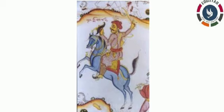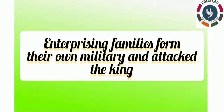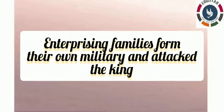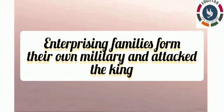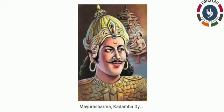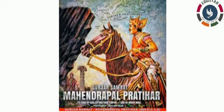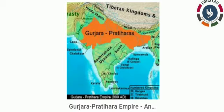In another way, new dynasties also formed. Men from an enterprising — that is, influential and wealthy — family would form a military force within the kingdom itself. With that military support, they would wage war against the king, defeat him, and conquer the kingdom. For example, Kadamba Mayurasharma and Gurjara Pratihara Harichandra were Brahmanas who gave up their traditional professions, took to arms, and successfully established kingdoms in Karnataka and Rajasthan respectively.